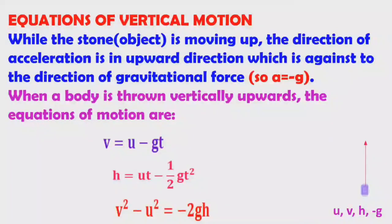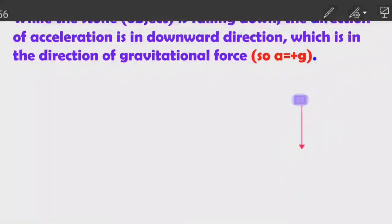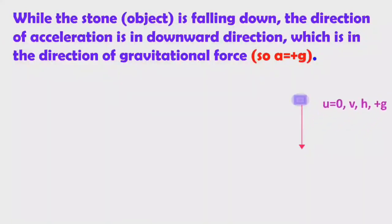For a freely falling body, the initial velocity U is zero — remember this. Its velocity slowly increases. V is the final velocity, H is the height from which it is falling, and A is plus G. By substituting these values, we get: V equals G T; H equals half G T square; V square equals 2 G H. These are the equations of motion for a freely falling body.